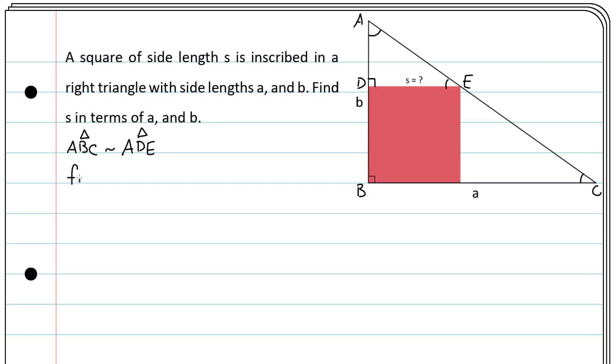From Thales' theorem, the ratio between AD and AB is the same as the ratio of DE and BC.